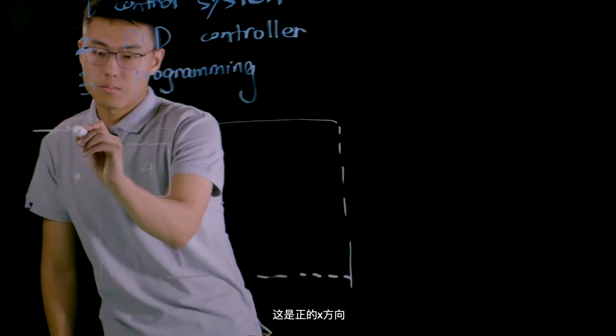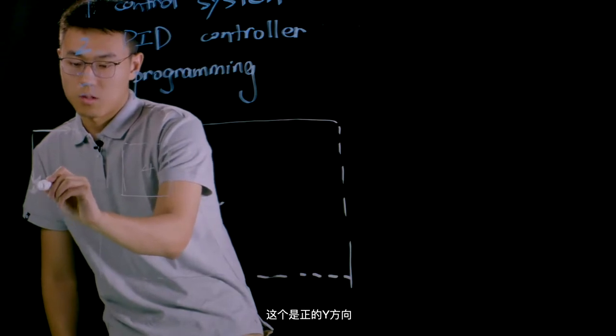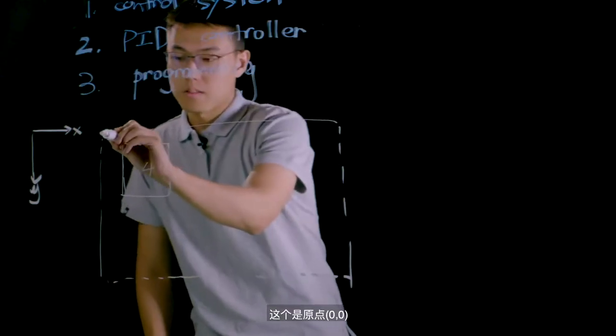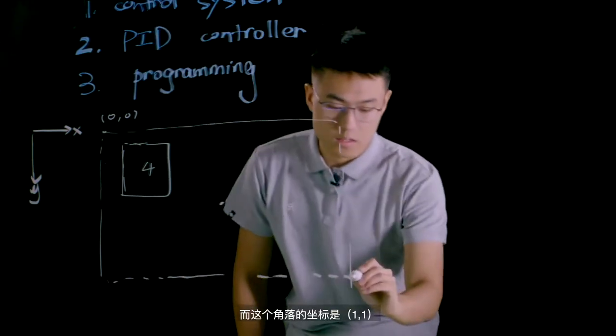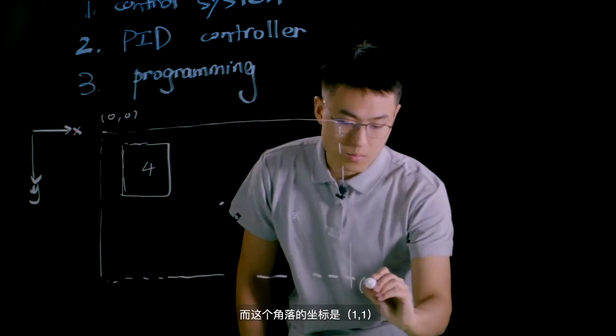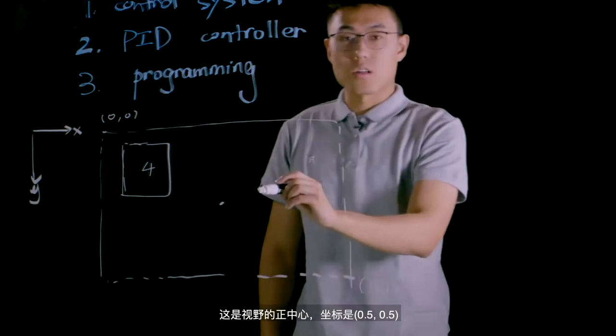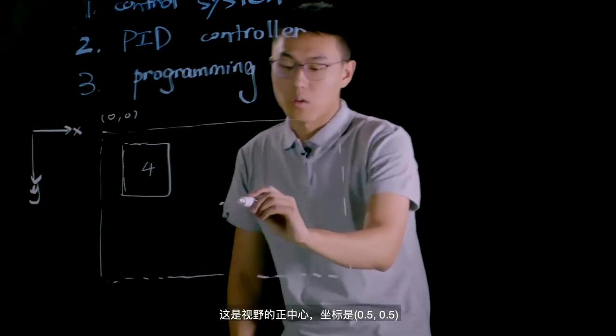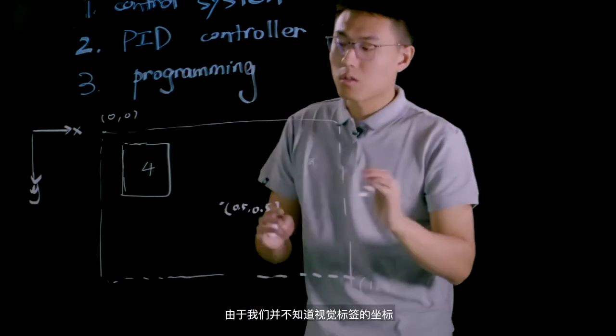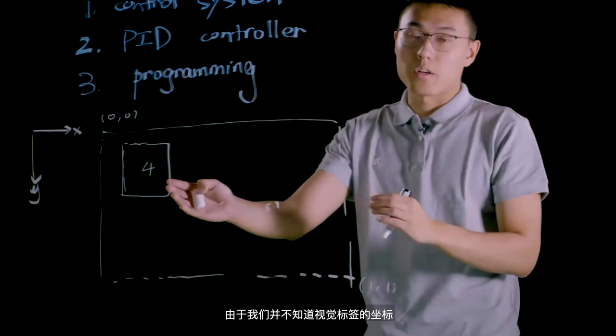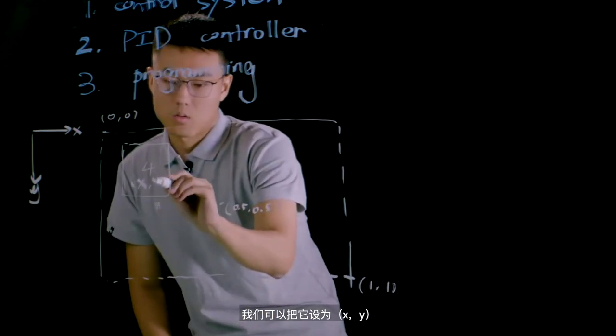Let's say this is the positive x direction and this is the positive y direction. And this is the origin 0, 0. And this corner has coordinates 1, 1. Since this is the center of the viewport, the coordinate of it is 0.5, 0.5. And since we don't know the position of this visual marker, let's say the coordinate of this visual marker is x, y.